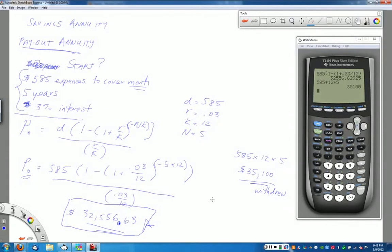So that $35,100 of payments, and then subtract the initial amount that you had in the account, which was $32,556.63, and that would give me, during that time period, even though I was taking money out, I still managed to end up with $2,543.37 worth of interest, which is pretty awesome.